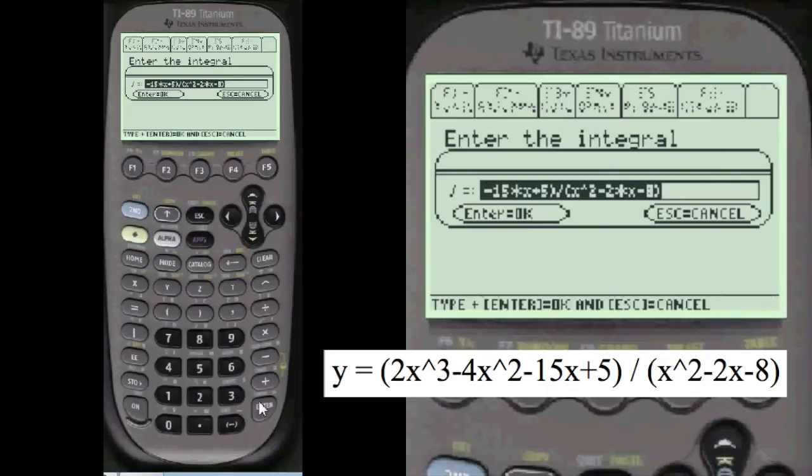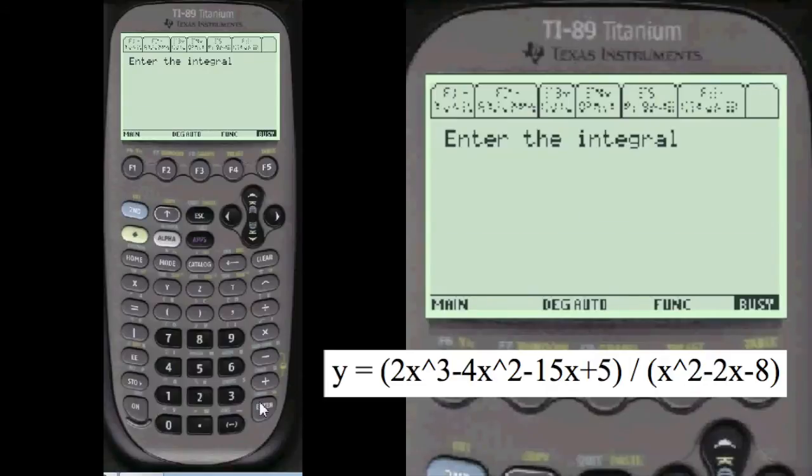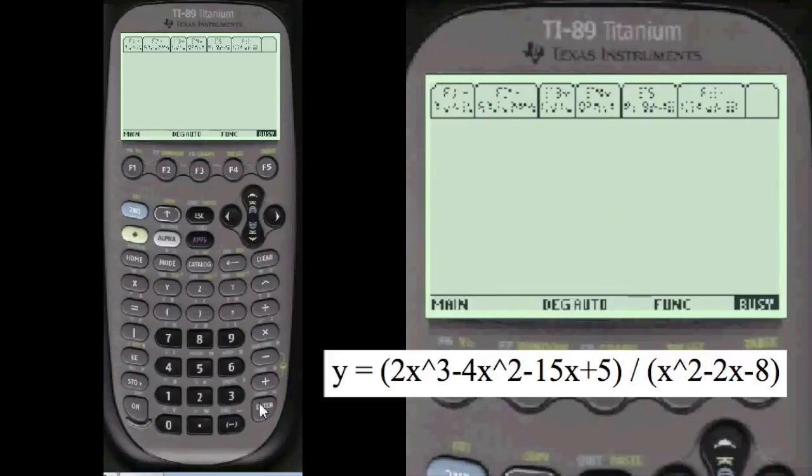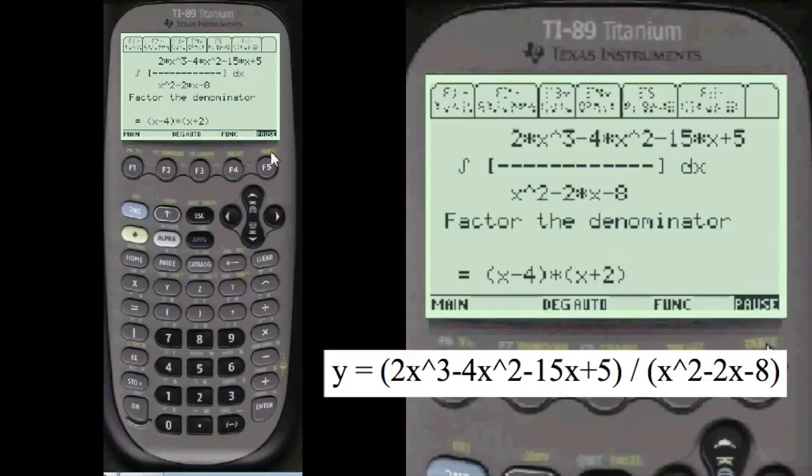Press enter. When it's busy here it's loading the program. I always show you what you've entered so you can change it if you want. 2x cubed minus 4x squared minus 15x plus 5. That's x squared minus 2x minus 8. That's good. I'm going to say OK.